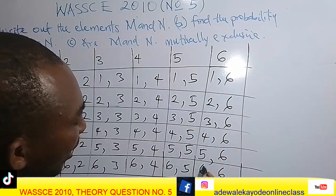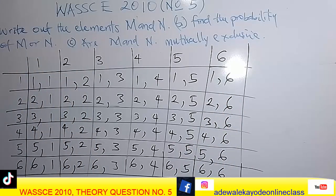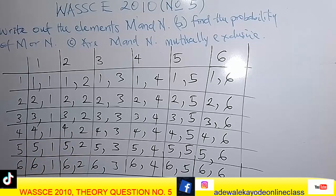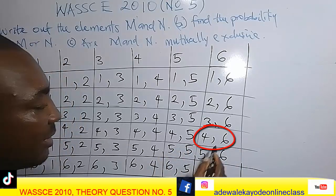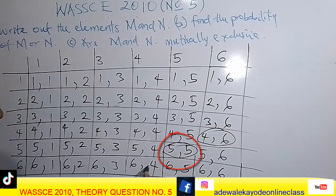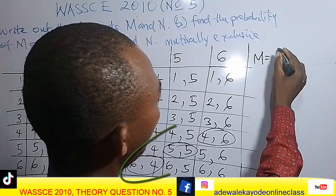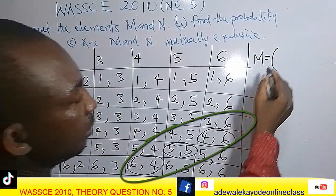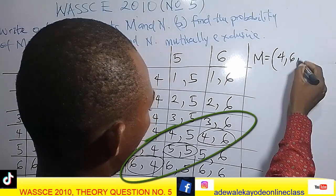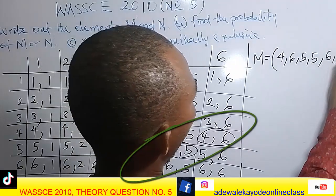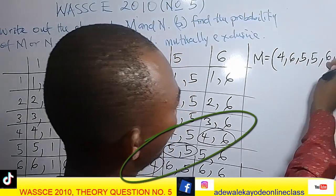Now the question says M is where the sum of the outcomes equals 10. Where can we get 10? Four plus six is 10, five plus five is 10, six plus four is 10. So set M equals {(4,6), (5,5), (6,4)}.